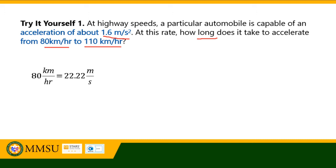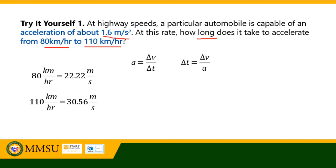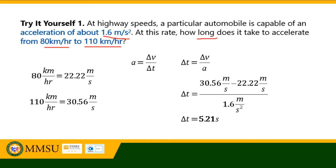We convert the velocities to match the unit of acceleration. 80 km/h equals 22.22 m/s, and 110 km/h equals 30.56 m/s. Since acceleration equals change in velocity over time, we solve for time: t = Δv / a = (30.56 - 22.22) / 1.6 = 8.34 / 1.6, which gives a time of 5.21 seconds.